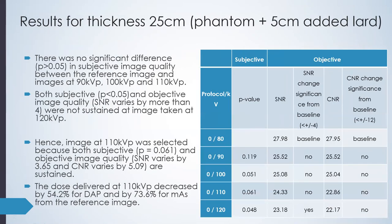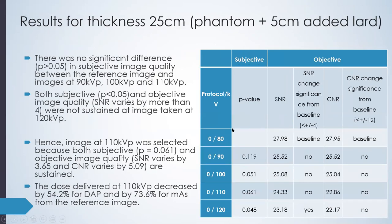For the second thickness at 25 centimeters, there was no significant difference in subjective image quality between the reference image and images at 90, 100, and 110 KVP. Both subjective and objective image quality were not sustained at 120 KVP, so the image at 120 KVP was excluded and the image at 110 KVP was selected. The dose at 110 KVP decreased by 54.2% for DAP and 73.6% for MAS.